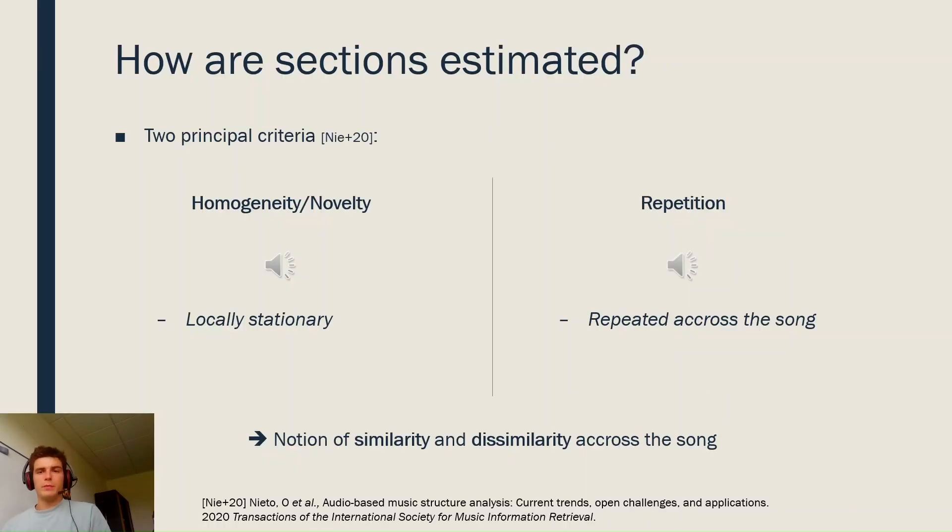So, how could one estimate musical sections? Mainly, algorithms in the literature follow two principles. The first one is called homogeneity, or its counterpart is called novelty, and considers that segments are locally stationary. This may be explained by this example.